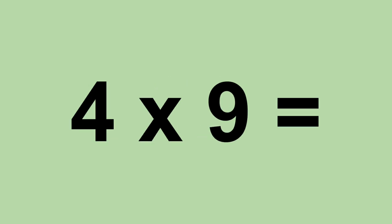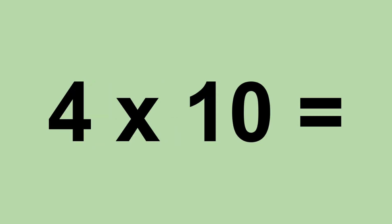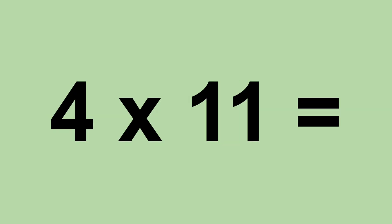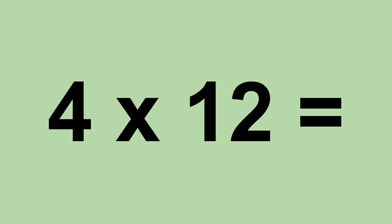Four times nine equals thirty-six. Four times ten equals forty. Four times eleven equals forty-four. Four times twelve equals forty-eight.